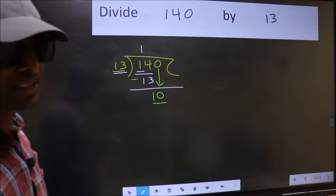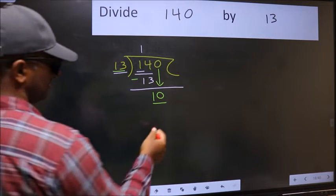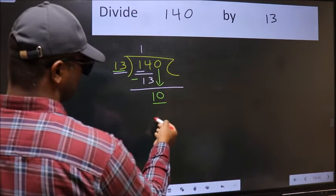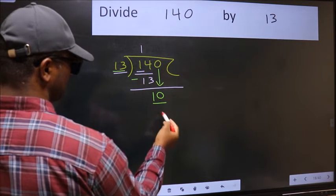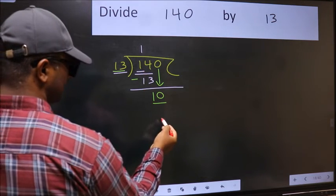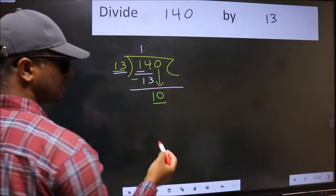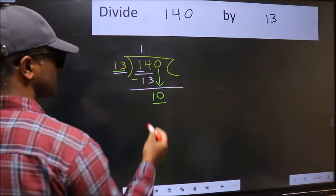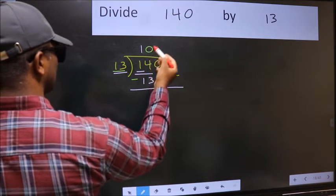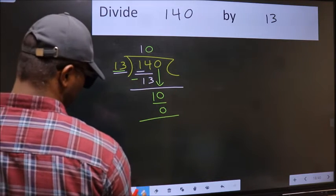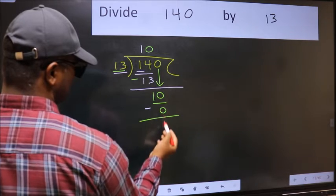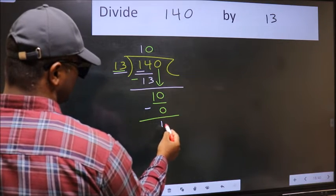So what you should do is, which number should we take here? If I take 1, we will get 13. But 13 is larger than 10. So what we should do is we should take 0. So 13 into 0 is 0. Now we should subtract. 10 minus 0 is 10.